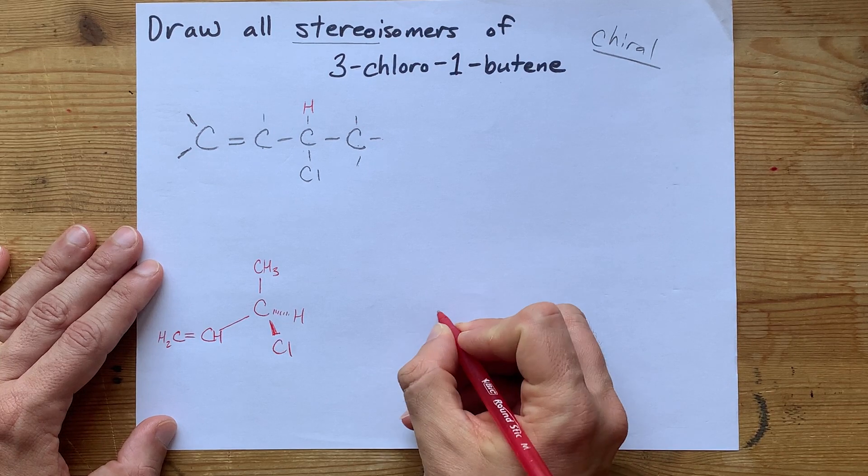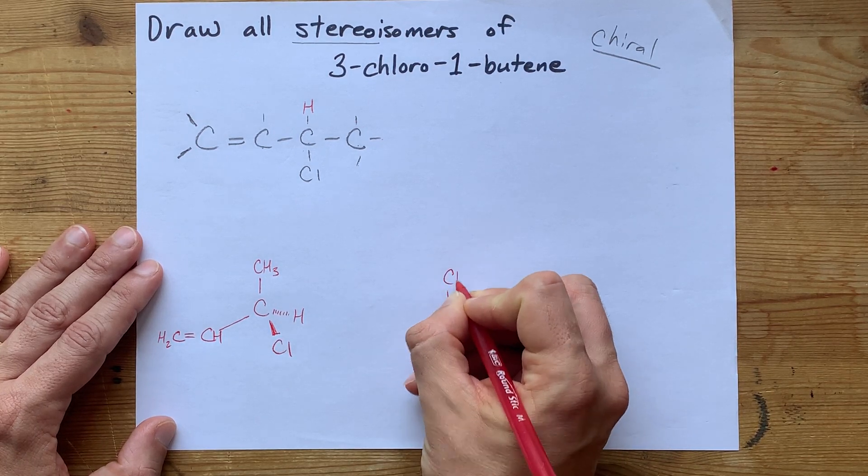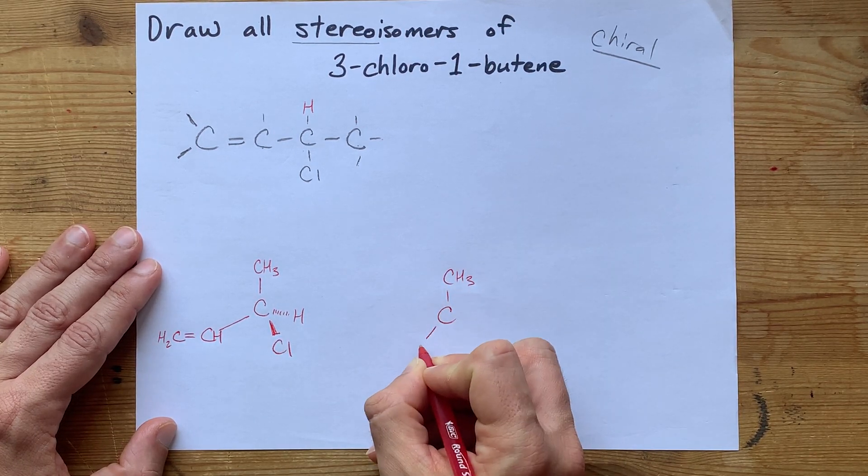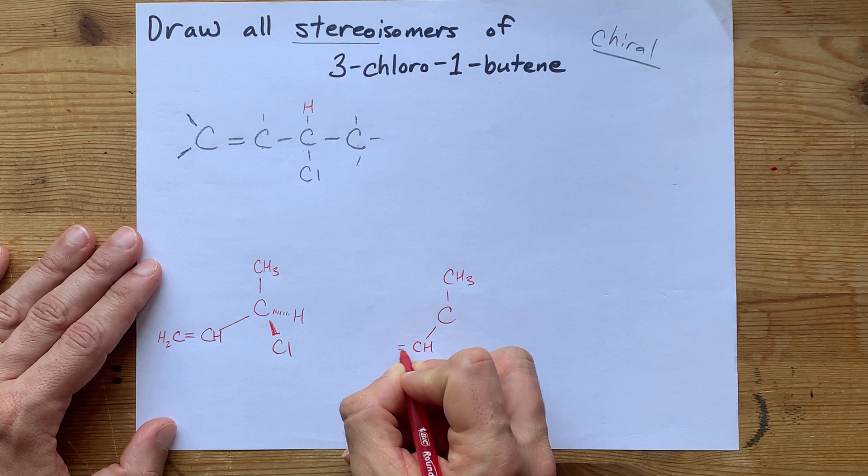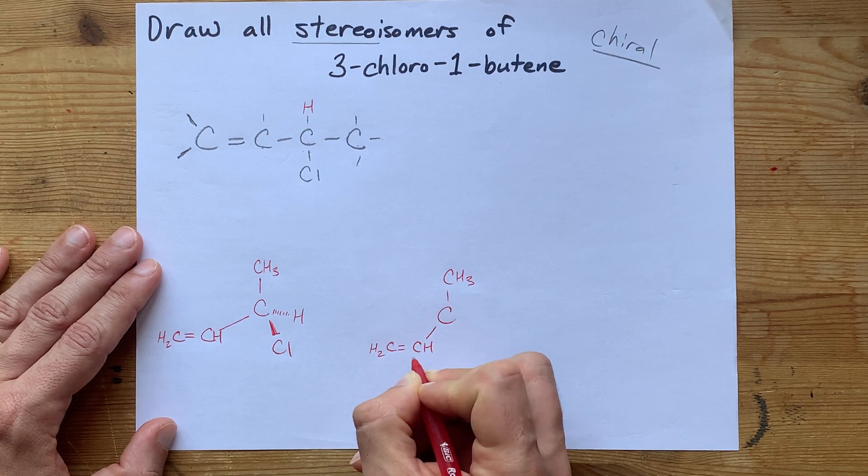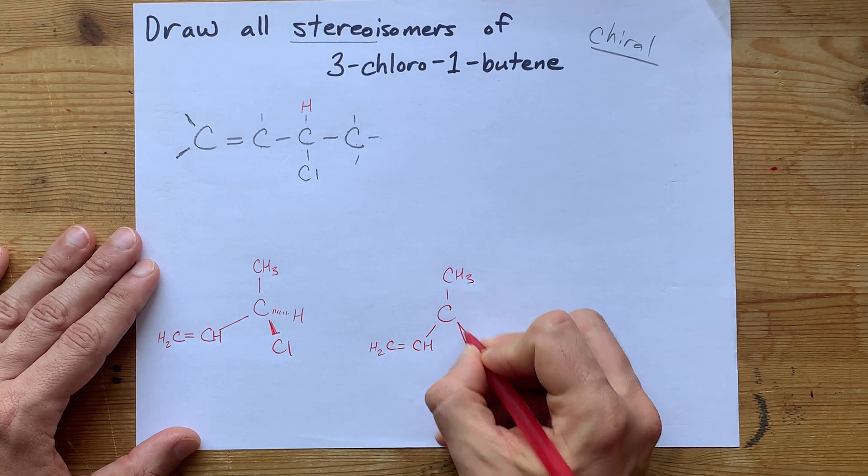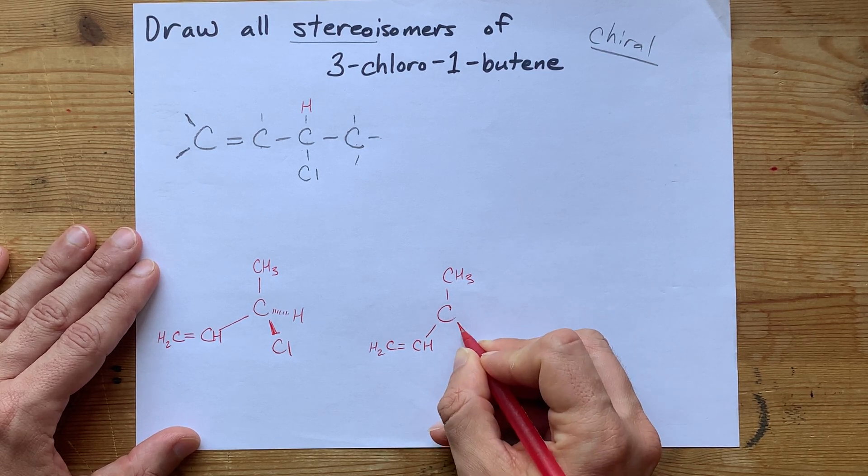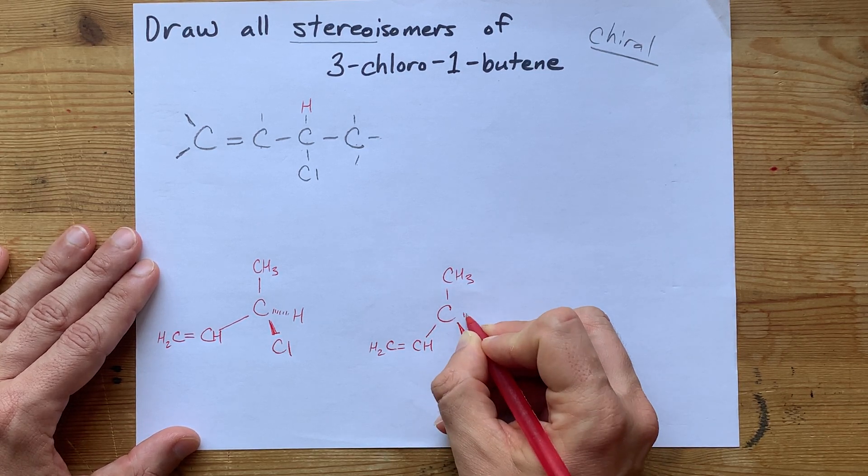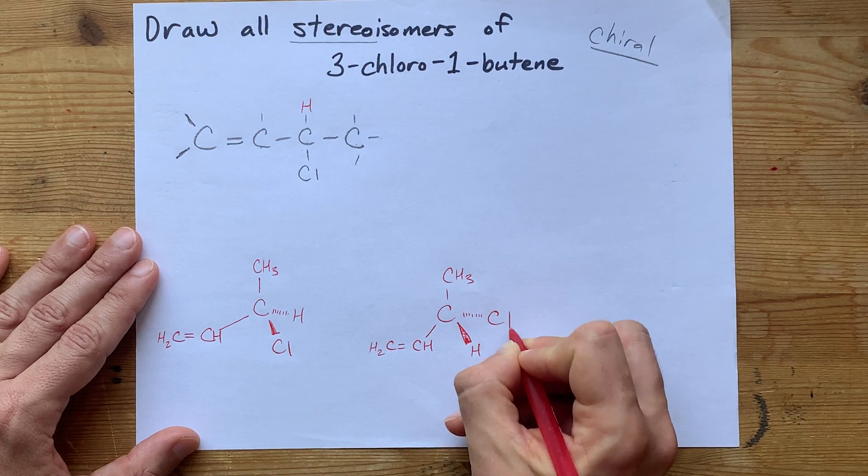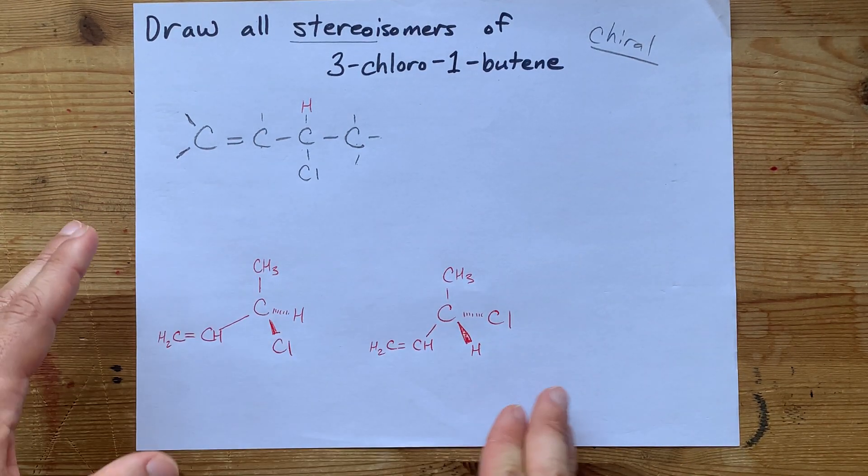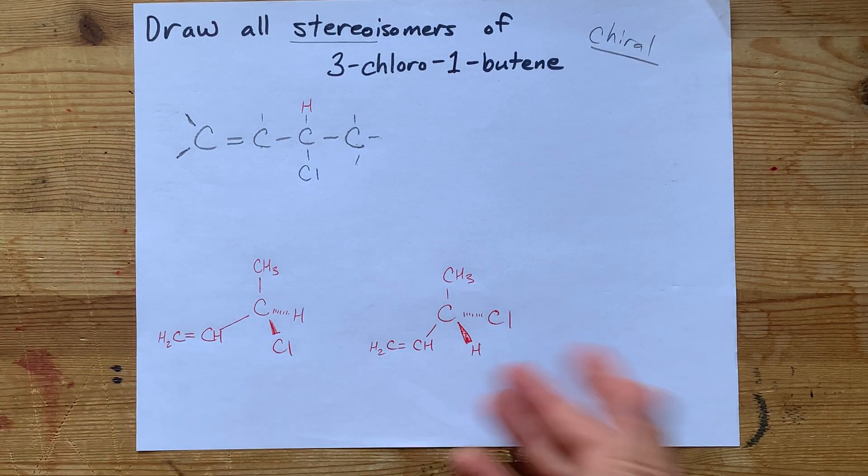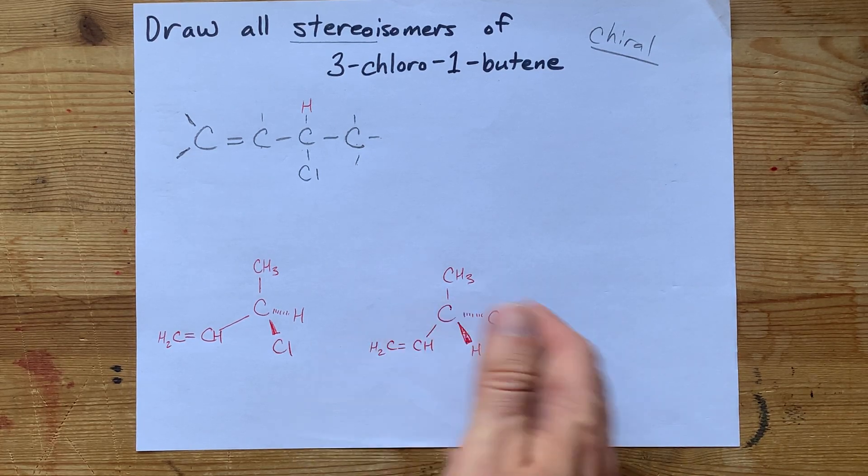Then the other isomer is the exact same arrangement. Let's see if I can do this properly. H2C, and then I'm going to switch the two atoms that were coming out at me and going into the page. Cl. These are actually non-superimposable mirror images, although I don't expect anyone to see that because of the way I drew it.